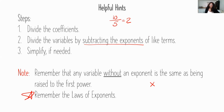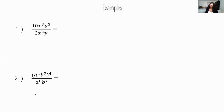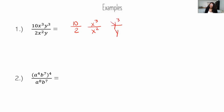We have four examples today. For the first one: 10x³y³ divided by 2x²y. We're going to split these up: 10 over 2, then x cubed over x squared, then y cubed over y. Splitting it up helps you see it better. So 10 divided by 2 gives me 5.